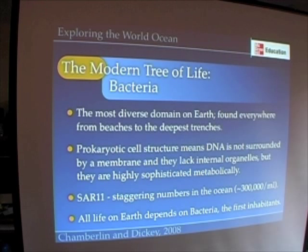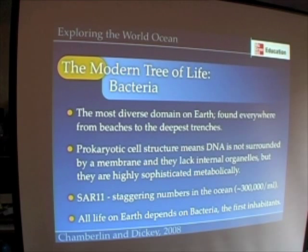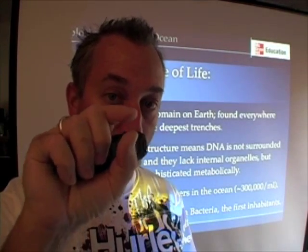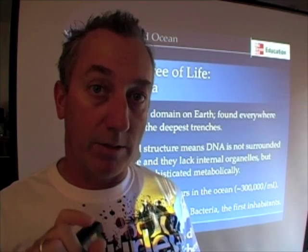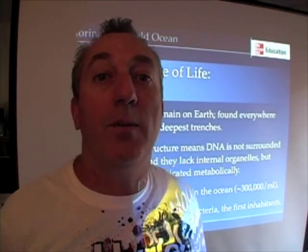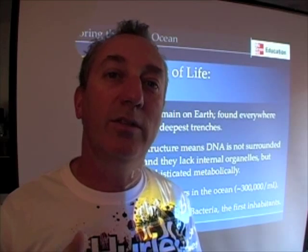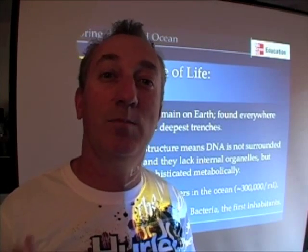Bacteria have a cell structure that's called prokaryotic, meaning their DNA is not surrounded by a membrane — our DNA is surrounded in a nucleus. They lack internal organelles, but they are highly sophisticated metabolically and can use and break down many different substances. Their numbers in the ocean are staggering. In one milliliter — a cubic centimeter — we find 300,000 cells of SAR 11. On average, about a million bacteria are found in a drop of seawater. When you swallow seawater at the beach, you're swallowing millions of bacteria.